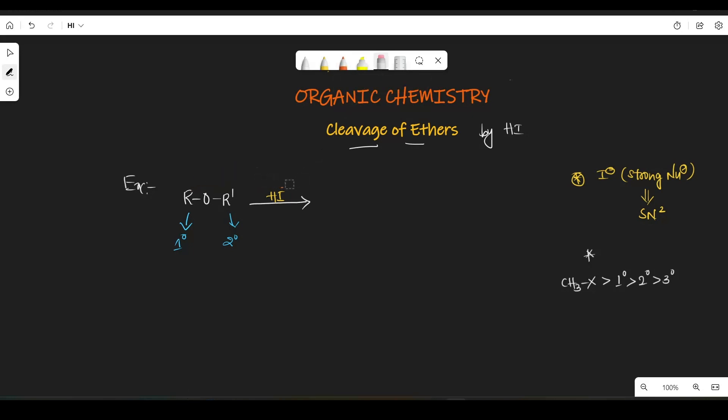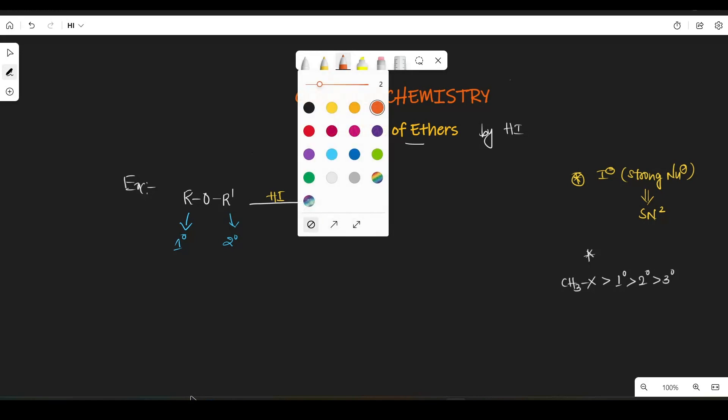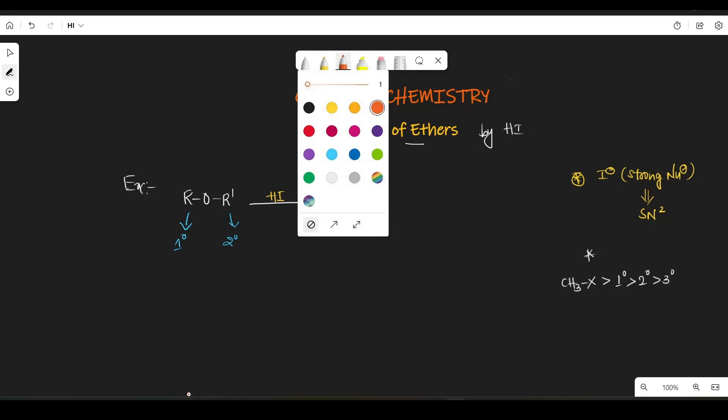I will explain you detail mechanism also. So you can see this video by 2x speed or 1.75x speed for the time being. So now let's see. This I- will attack on this and you will get the product here R-I plus R'-OH. I hope this is clear.